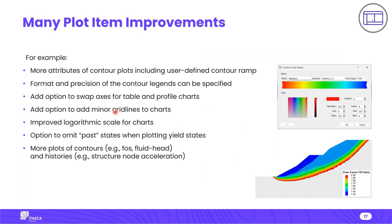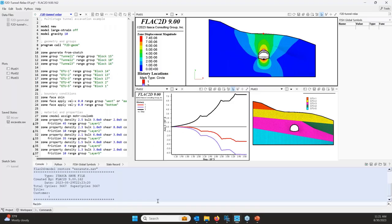There are also many plot improvements in version 9, including more attributes for contour plots with user-defined contour ramps, ability to modify format and precision of contour legends, an option to swap axes for tables and profile charts, minor grid lines for charts, improved logarithmic scale for charts, and a useful option to omit past states when plotting yield states.